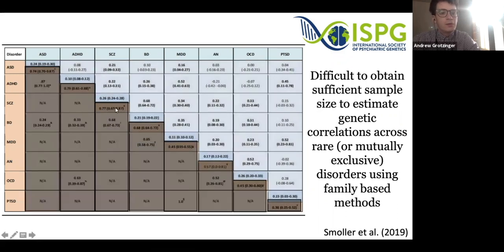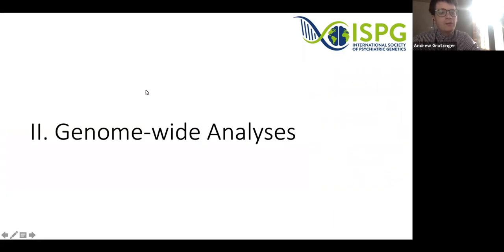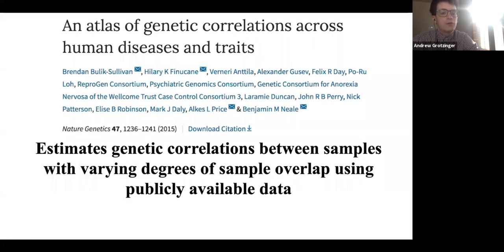For genomic methods, shown in blue above the diagonal, genetic correlations are estimated across the full psychiatric space. That's possible because using genome-wide methods such as bivariate LD score regression, introduced in this Nature Genetics paper in 2015, we're able to estimate genetic correlations across samples with varying degrees of sample overlap, including mutually exclusive samples, allowing us to look at genetic correlations for rare disorders unlikely to be measured in the same sample.